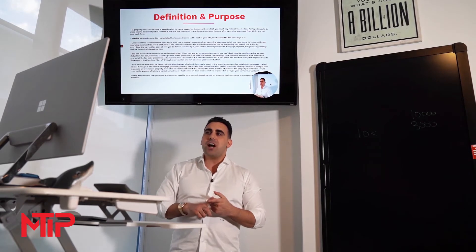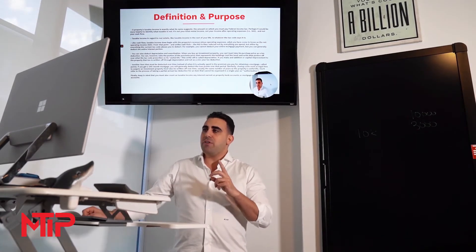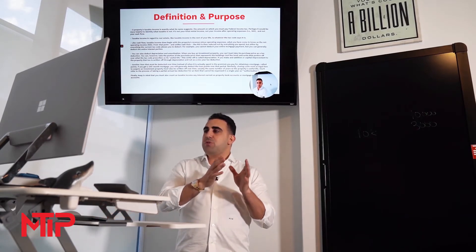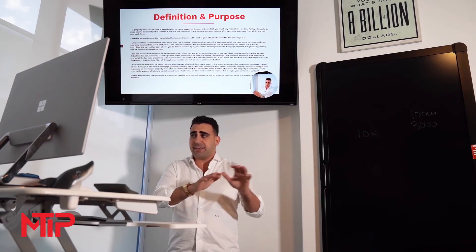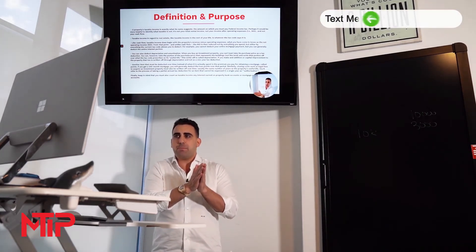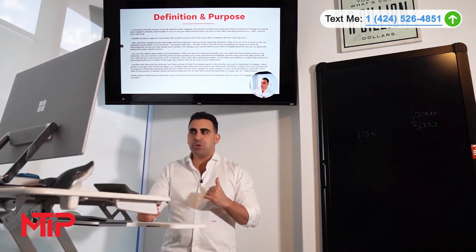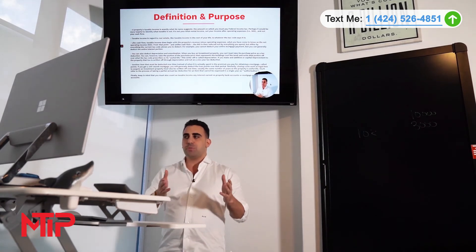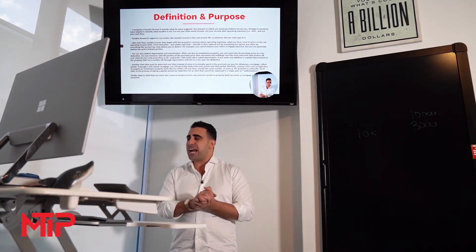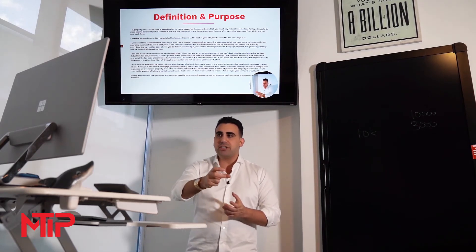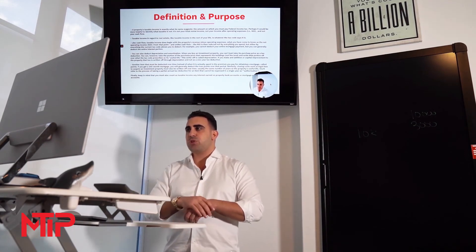You can also deduct depreciation and amortization. If you take the portion of the property — it's the building, not the land — you can write off that portion over what the tax code calls the useful life, which we described in the depreciation section. This write-off is called depreciation. If you make a capital improvement to the property, that too is considered a write-off through depreciation.